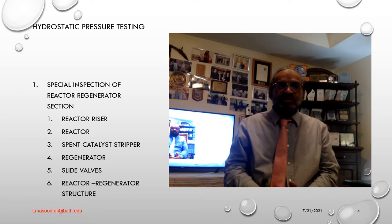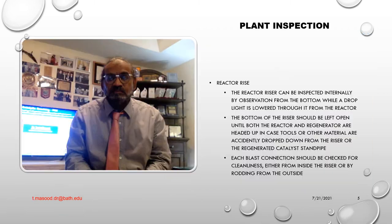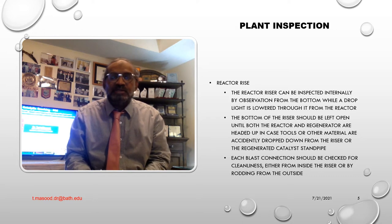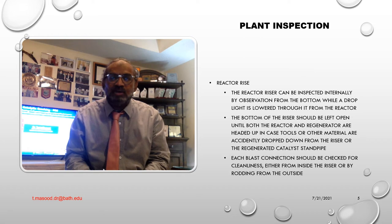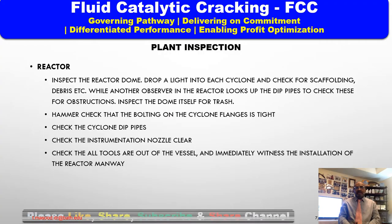We are going to discuss: reactor riser, reactor spent catalyst stripper, regenerator, slide valves, and reactor-regenerator structure. Reactor riser: number one — the reactor riser can be inspected internally by observation from the bottom while a drop light is lowered through it, or from reactor number two. Number two — the bottom of the riser should be left open until both the reactor and regenerator are headed up, in case tools or other materials are accidentally dropped down from the riser or regenerator catalyst standby. Number three — each blast connection should be checked for cleanliness, either from inside the riser or by rodding up from the outside.